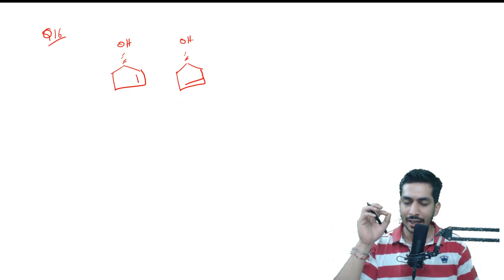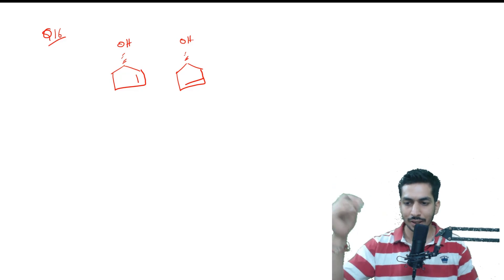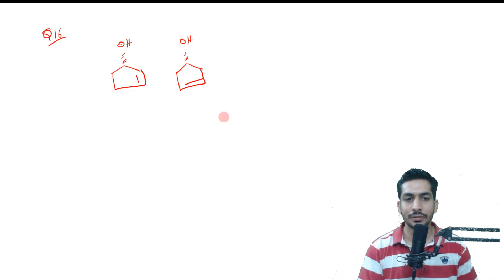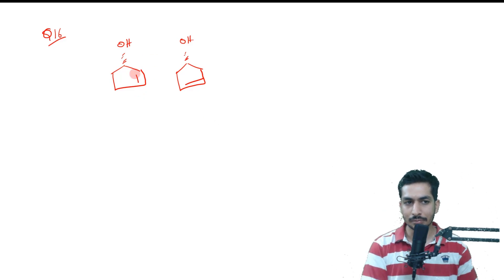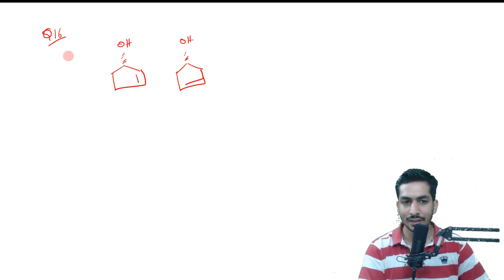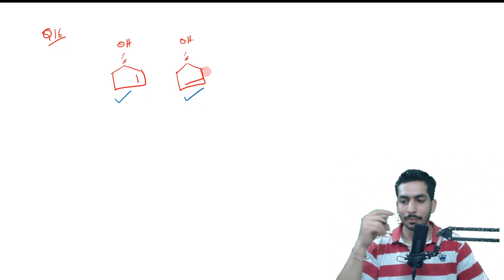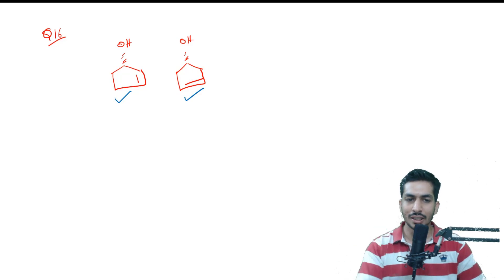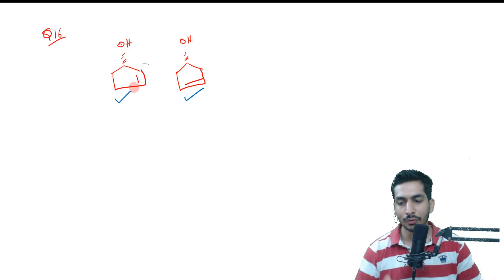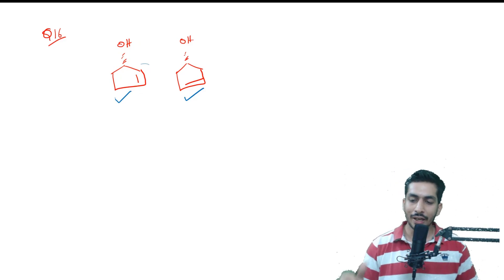There was another question on Evans auxiliary followed by metathesis using Grubbs catalyst. I'm not sure about the position of the double bond, so I'm not certain about the answer — it will be one of two possibilities depending on the double bond position. I'm not sure whether the double bond ends up here or there, but it is going to be one of those two options.